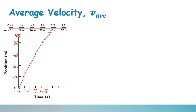Describing this position-time graph, we need to recall the idea of slope. Slope, symbolized as m, is denoted as rise over run, or Δy over Δx. An increasing slope is positive, a decreasing slope is negative, a small slope means slow motion, and a large slope means fast motion.